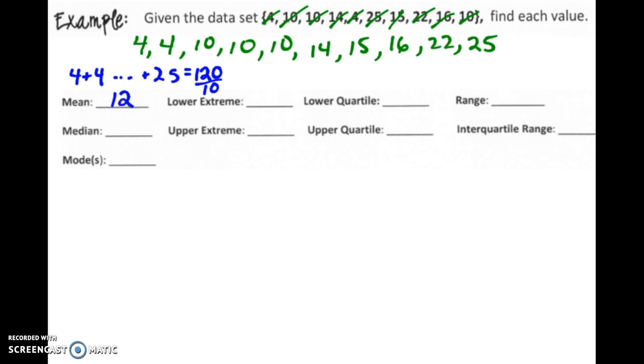For the median, we're going to look up at our data set, and notice there is an even number, so there's ten points. So halfway in between is after the fifth point. So when we have two middle values, the 10 and the 14, you take the average of those, or the number that's halfway in between. So in this case, our median is also 12.